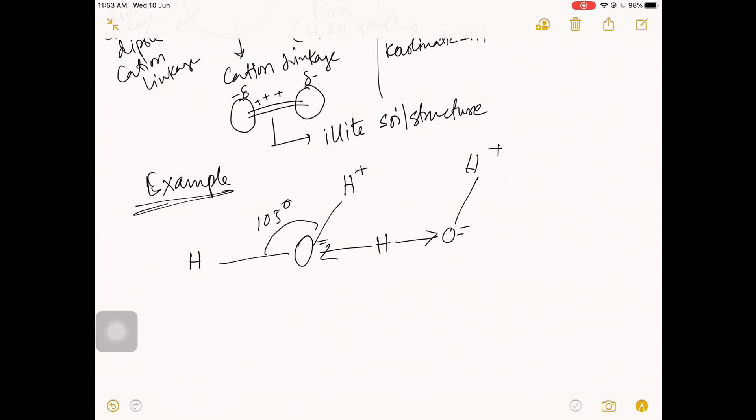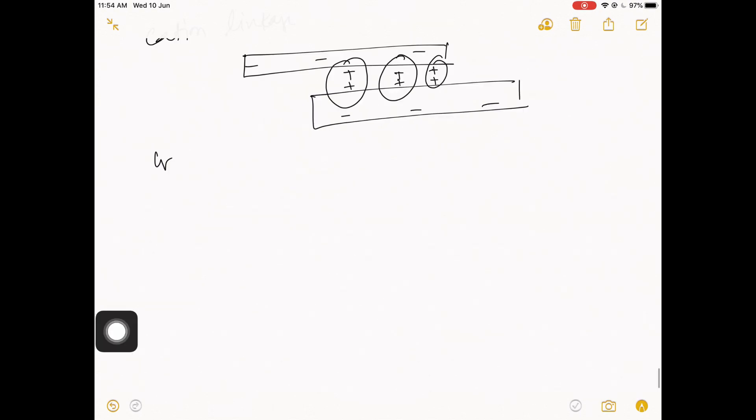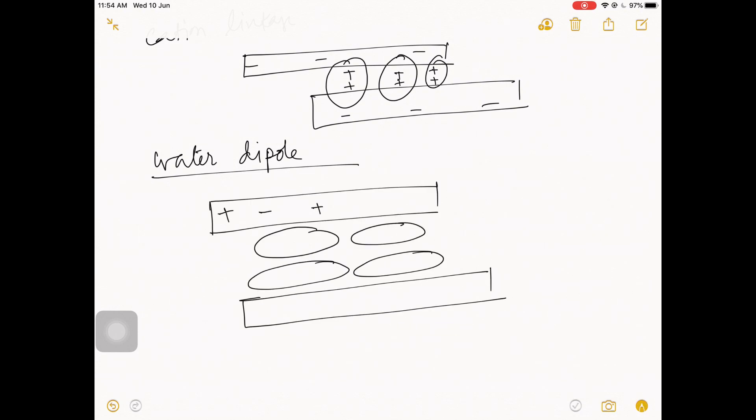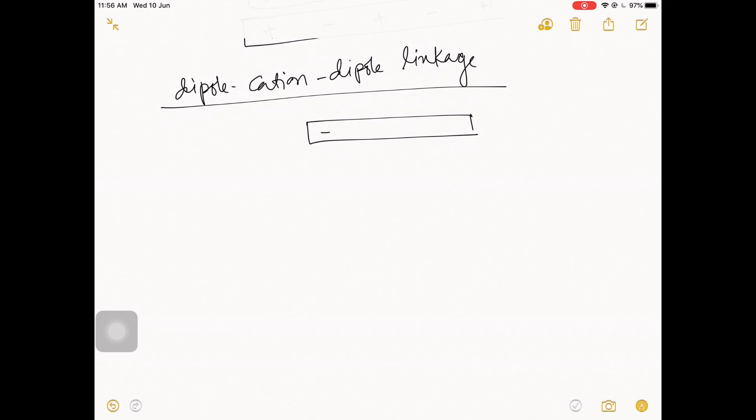Here are some examples. So this is the example of hydrogen bond. Number two, cation linkage - here you can see some plus-plus ions, they are making a bridge between two negative charge ions or colloids. Then water dipole linkage - the same bridge between water and dipole. And last is dipole cation dipole linkage. First there's two negative charge particles, then water particles, then again cation. So here is a negative charge on two sides, then water particles from two sides, and then in middle there is a dipole linkage.